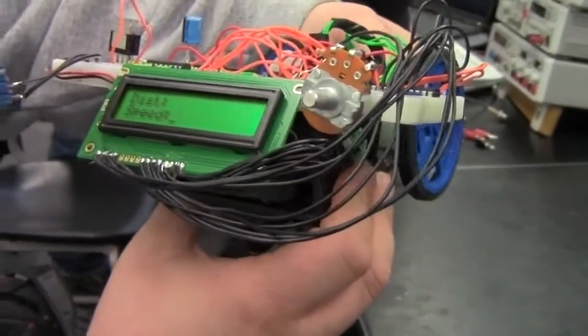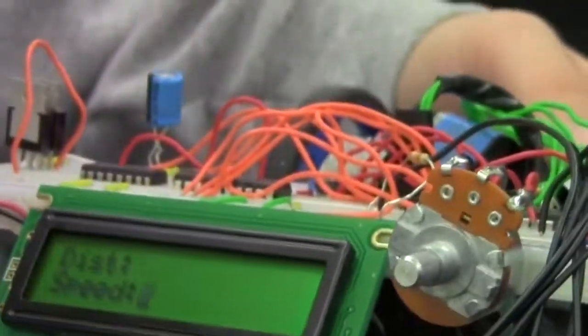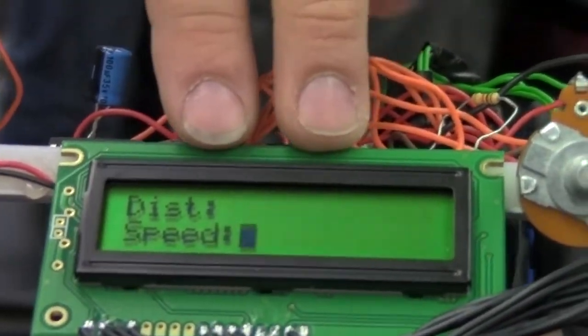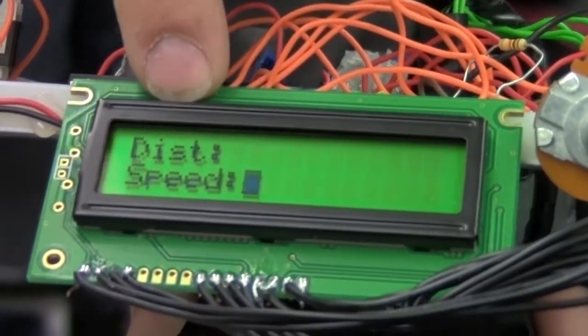Okay, so here's our project 2 for 4951. We integrated the optional LCD display that shows both distance and speed.